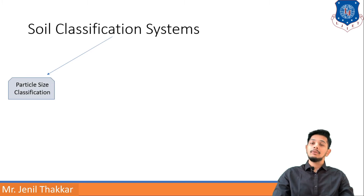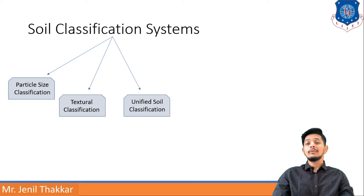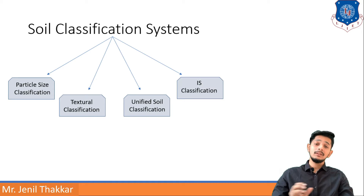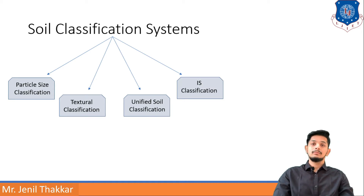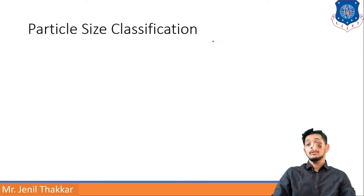Soil classification systems are divided into four parts: particle size classification, textural classification, unified soil classification, and IS classification. These are all different classification systems. Let us now look at particle size classification.